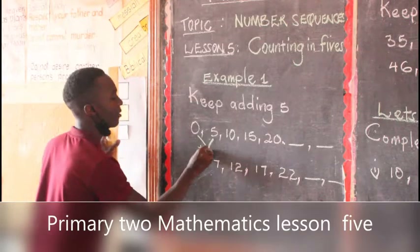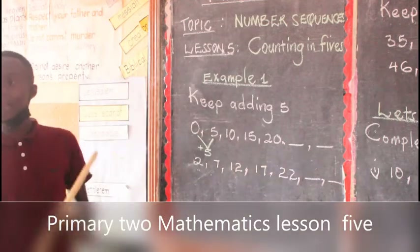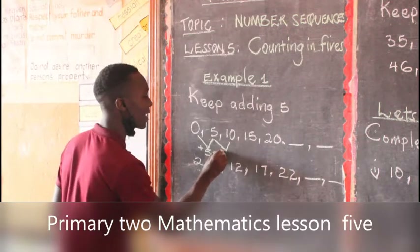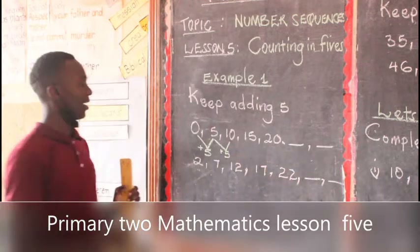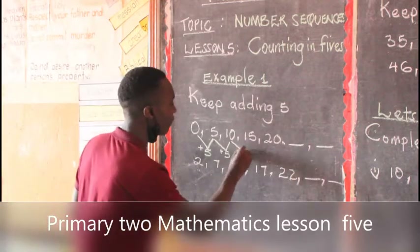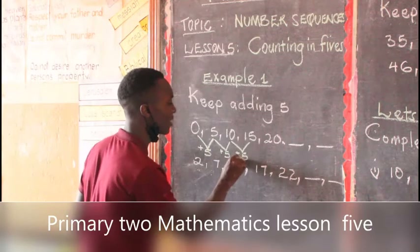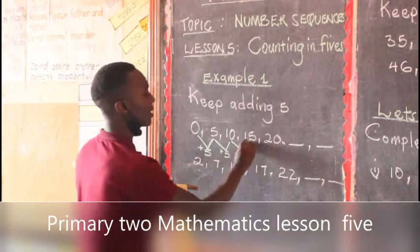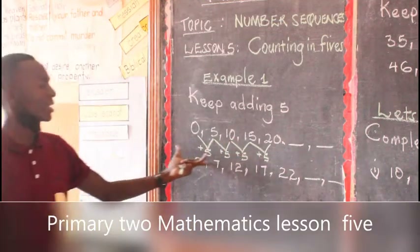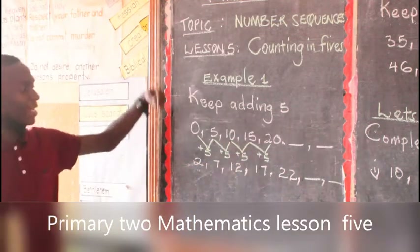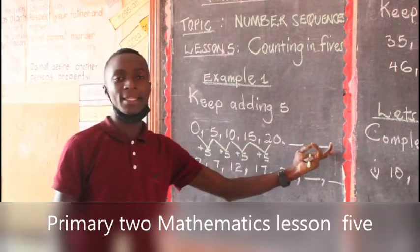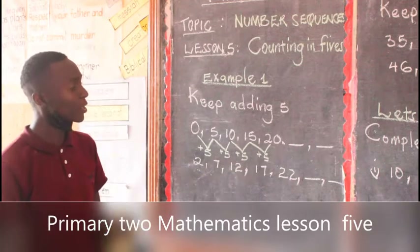They added 5 to 0 and got 5. From 5, they also added 5 and got 10. From 10 to get 15, they added 5 also. So it means that this is the sequence — they also added 5 each time. Since the sequence has been adding itself by 5, to fill these gaps, we are also going to add 5.